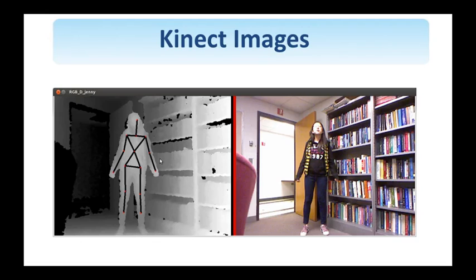The Kinect is intended for use with the Xbox, so it is of interest to compute the depth map but also infer body position. You see here the skeleton of the person on the left image — there's the person, the depth map, and the Kinect also provides a visible image. So you see the visible and the corresponding depth image that shows where the person stands, where the door is, and so on.